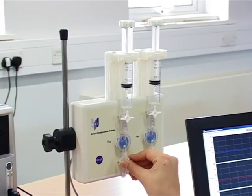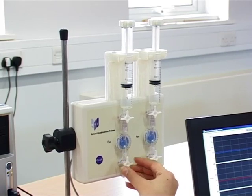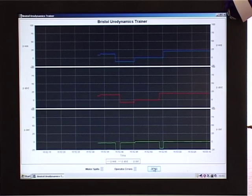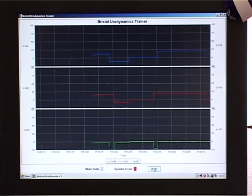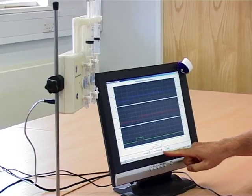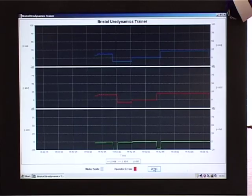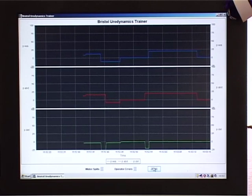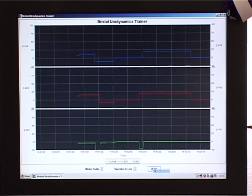If, however, zero is set while the taps are open to the patient, it would be an error as you would be setting your reference point as the unknown bladder pressure, known as zeroing to the bladder. The error signal on the screen points out that zero is being set to the wrong reference.